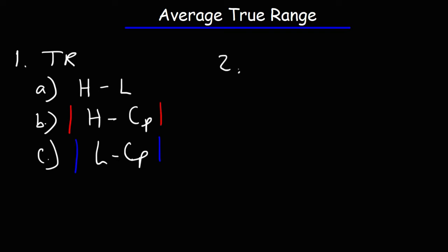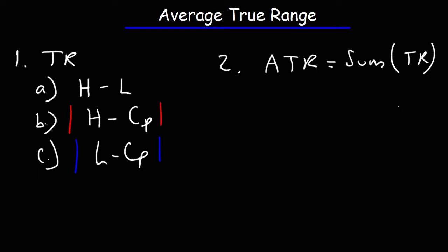Once you have the true range for that day, you need to determine the average true range, which is going to be the sum of the true ranges. It could be for a 14-day period, a 5-day period, divided by the number of days in the time period.